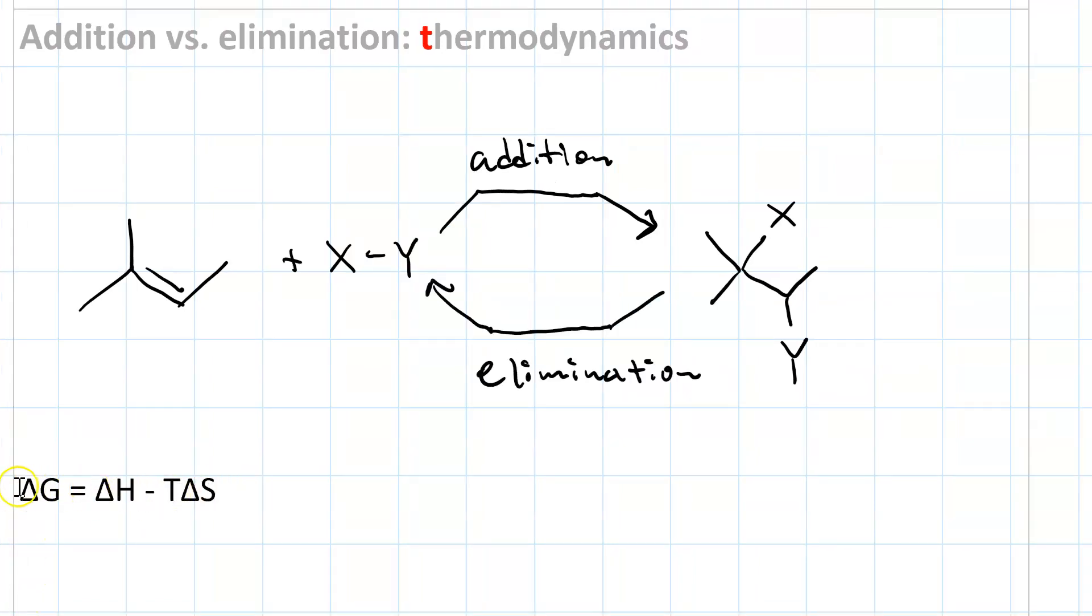So thermodynamics should make you think of the delta G equation, which is delta H minus T delta S. Now, in general, delta H is related to the bond strength, and delta S is related to the number of particles.